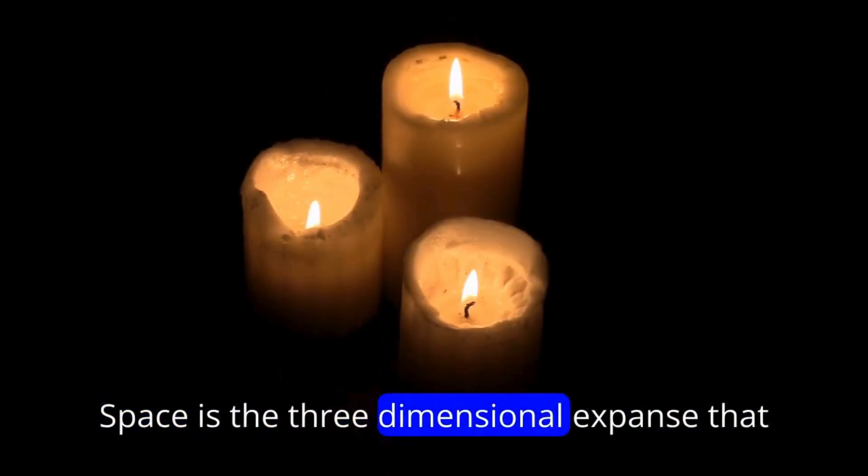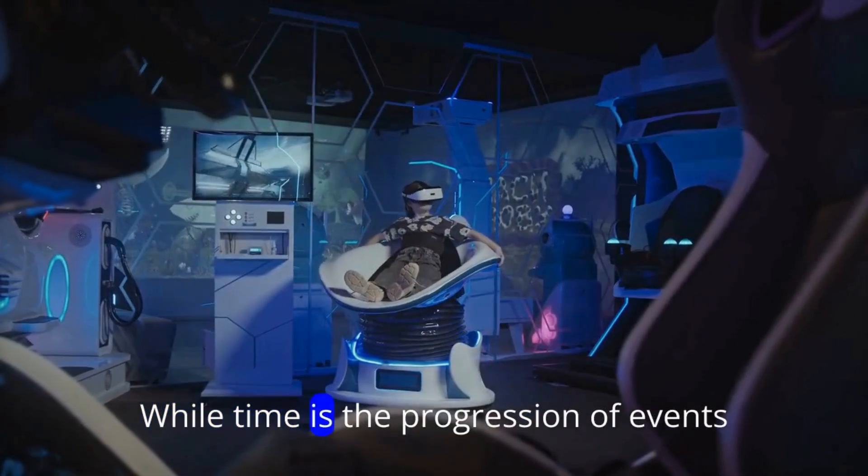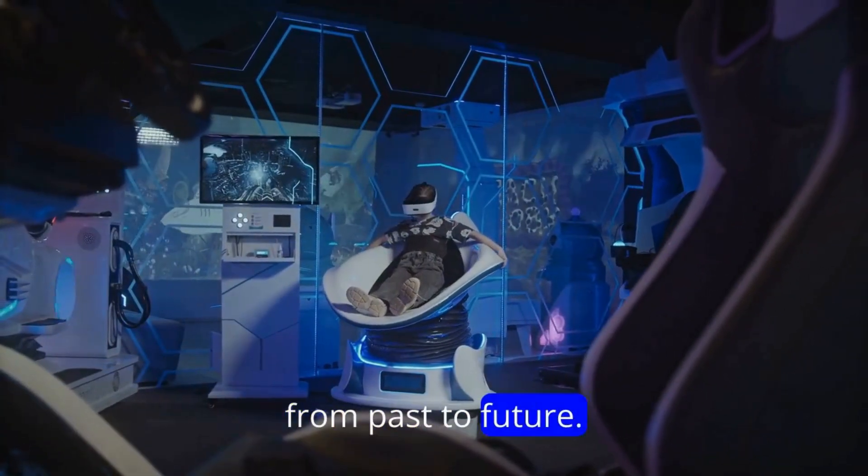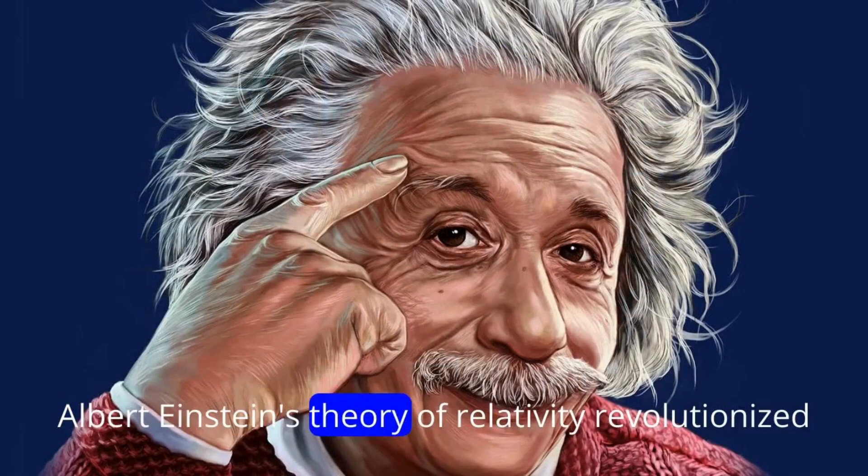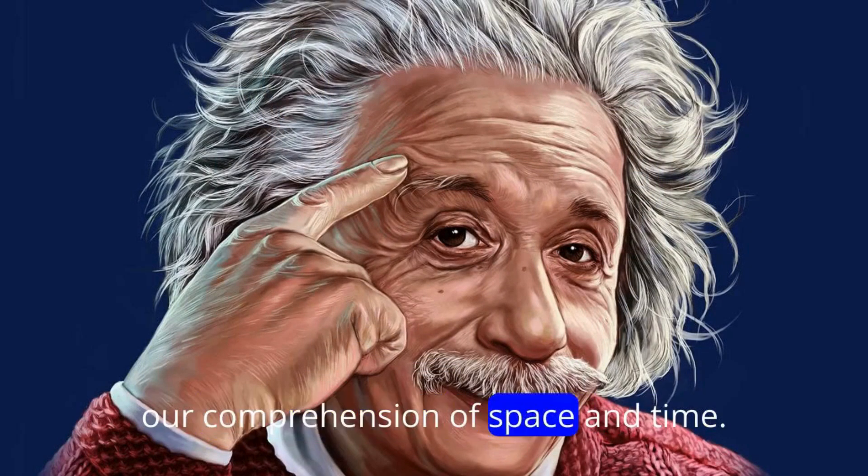Space is the three-dimensional expanse that surrounds us, while time is the progression of events from past to future. Albert Einstein's theory of relativity revolutionized our comprehension of space and time.